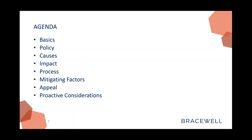I just want to set the table quickly about what we're talking about with suspension and debarment. When you talk about government enforcement actions, there are three fundamental areas: criminal, civil, and administrative. Suspension and debarment is an administrative remedy. Oftentimes it's going to be forgotten about when you're dealing with civil or criminal potential liability, but it's one of those things that can be really harmful to a company.